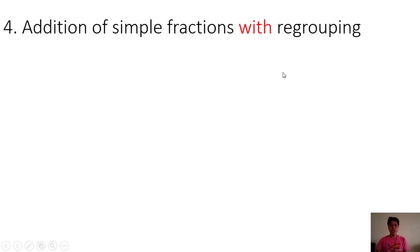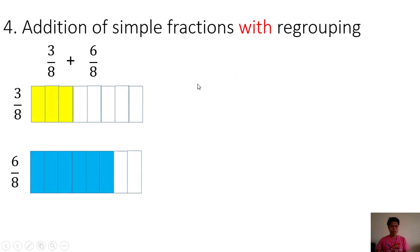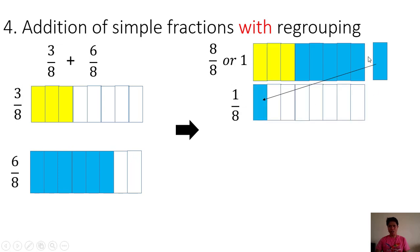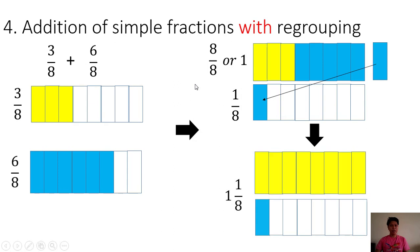Example number 4: addition of simple fractions without regrouping. 3/8 plus 6/8. We have 3/8 and we have 6/8. By combining, we have 3 yellow shaded parts and 5 more — since we need an additional 1 part, we draw another box with 8 equal parts and shade 1. Counting all shaded parts: 8 out of 8 equals 1 whole, and this 1 extra is 1/8. Therefore, 3/8 plus 6/8 is equal to 1 and 1/8.